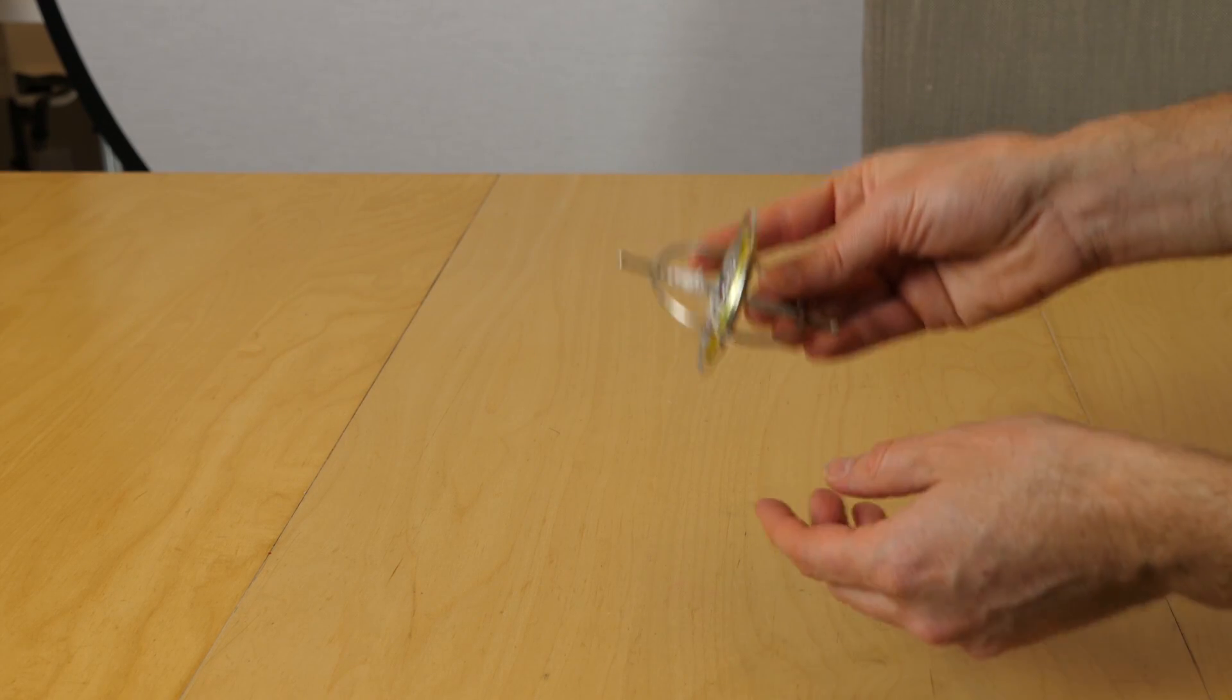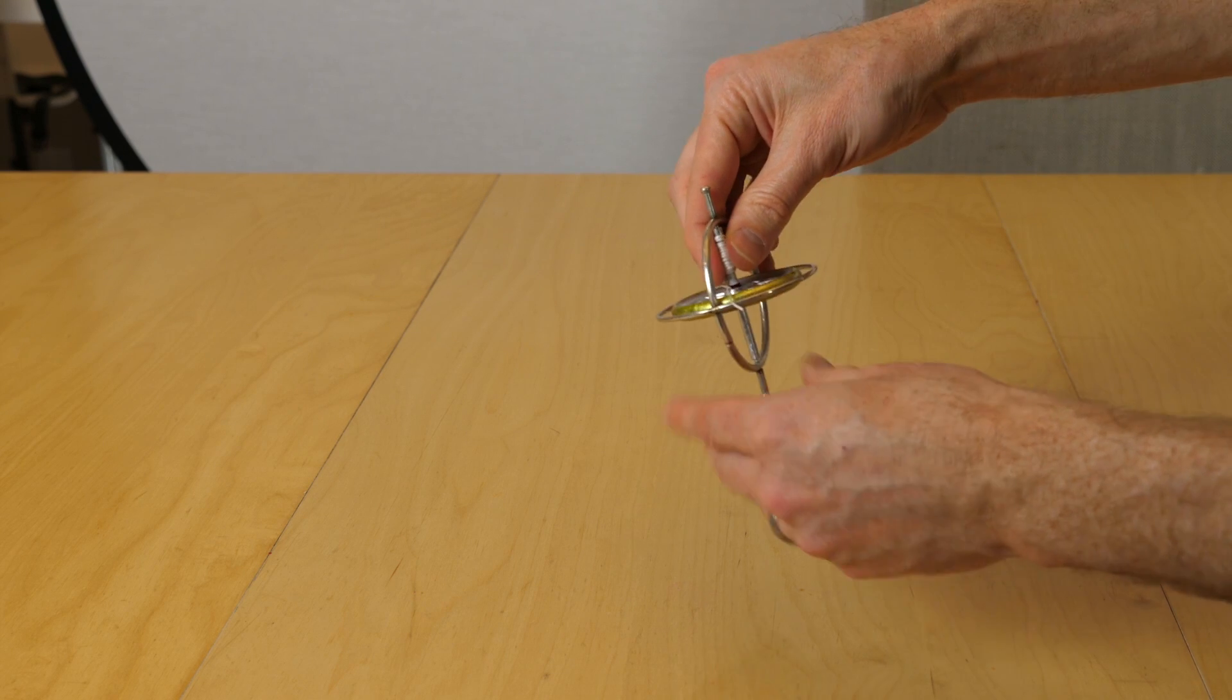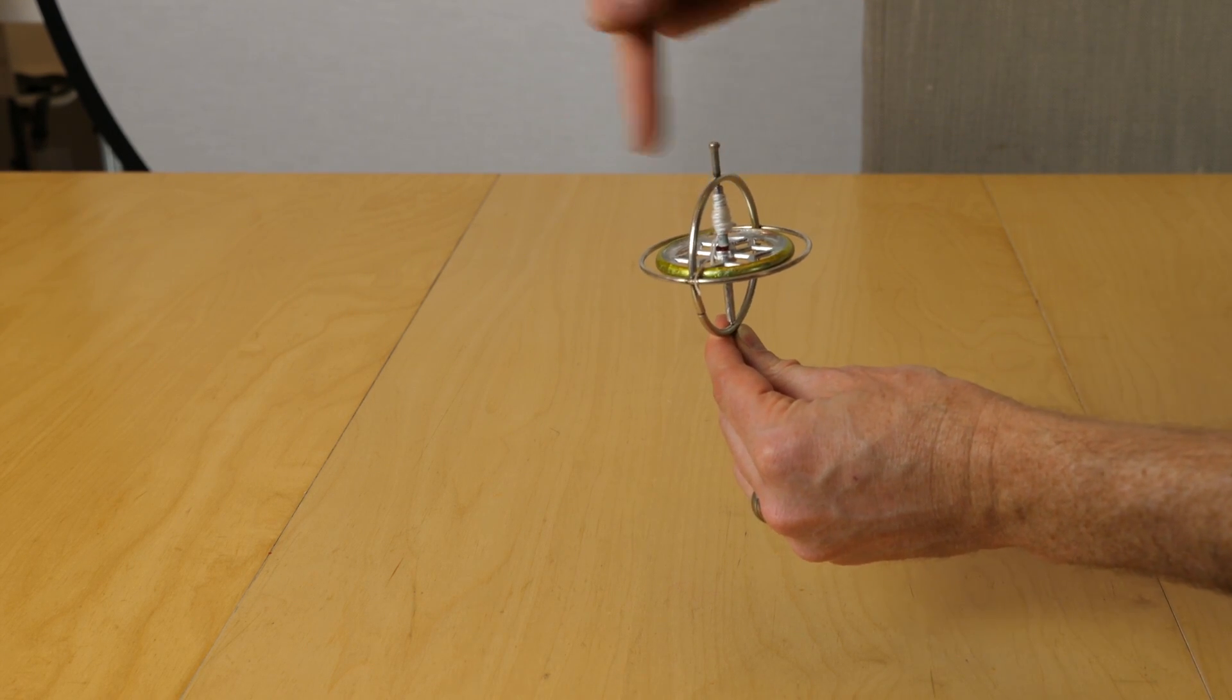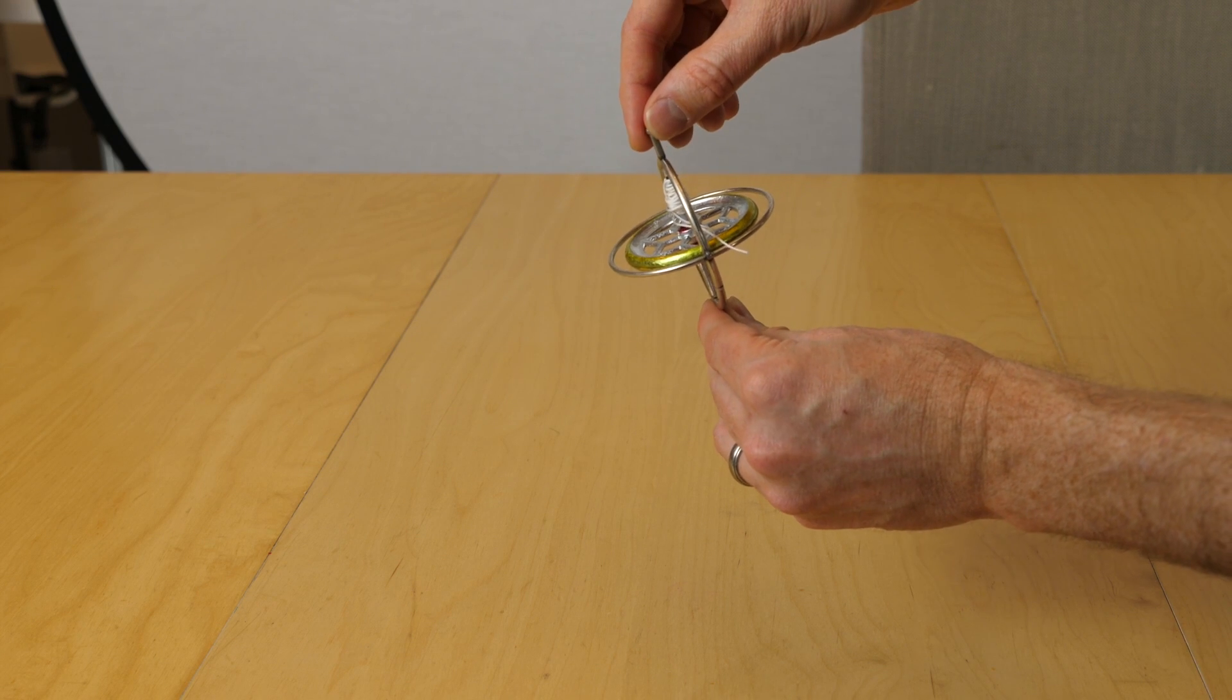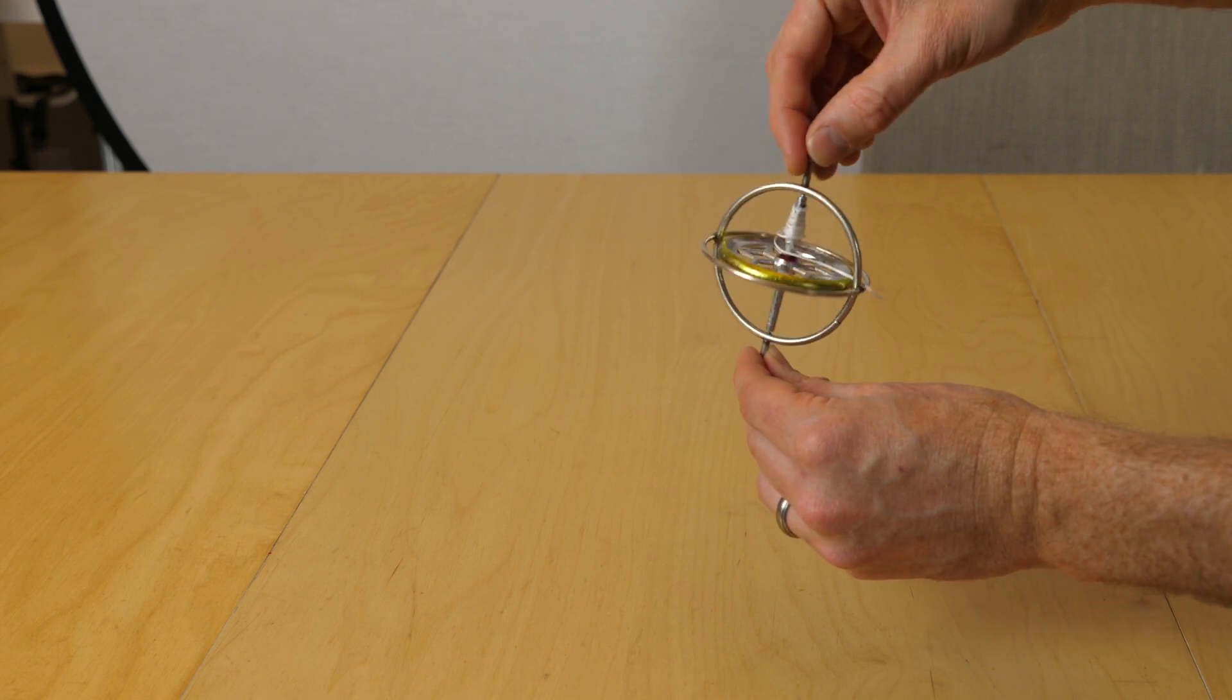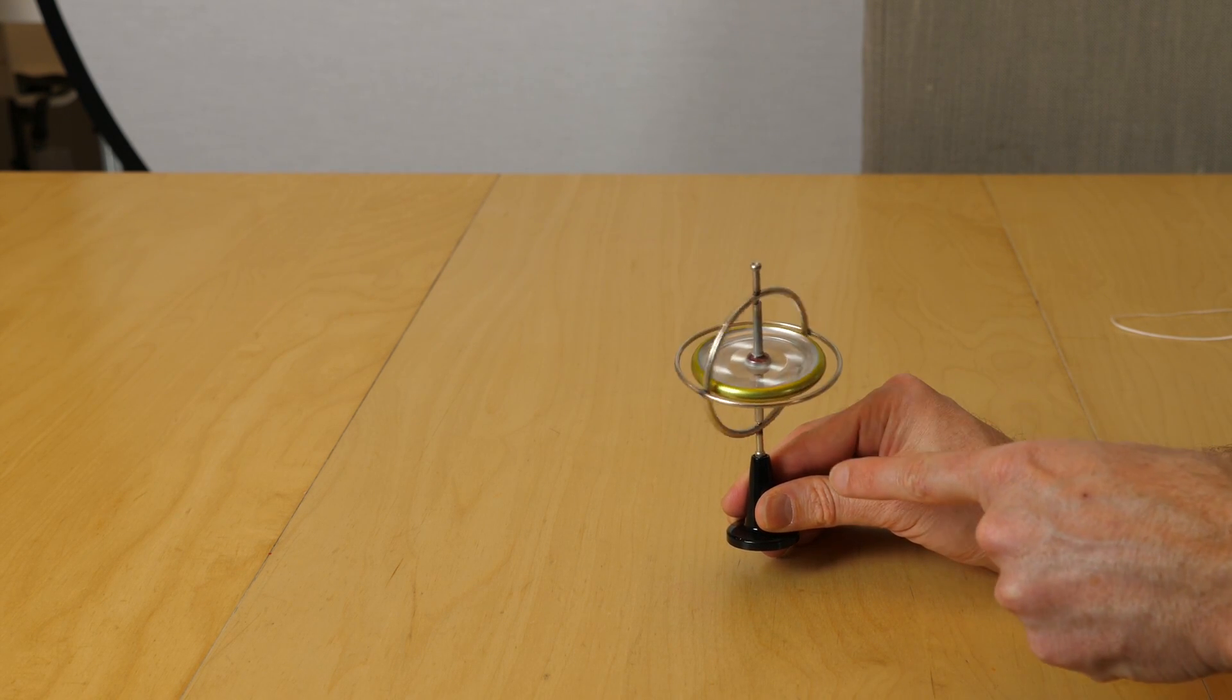So the reason why this is happening has to do with something called gyroscopic precession. Gyroscopic precession means that when a gyroscope is spinning, so when there's a spinning wheel that starts to fall, it doesn't just fall over. Rather, it starts to fall, but that falling turns into spinning. And it spins more and more and more as it starts to fall. So you'll notice that it doesn't just fall over even though it's off balance.